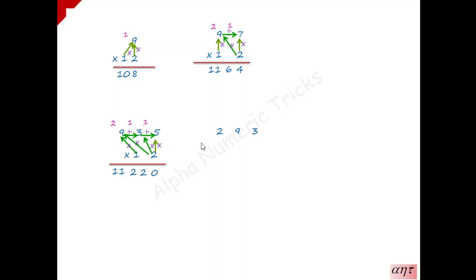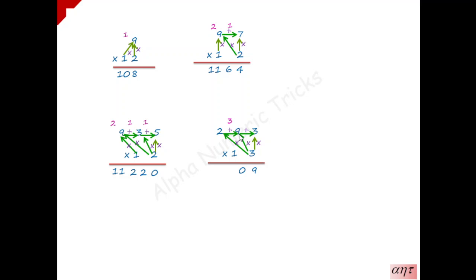Now multiply 293 by 13. 3 into 3 is 9 — write it here, no carry forward, leave the space blank. Then multiply 9 into 3, which is 27, and 27 is added with the immediate right number 3, which is 30 — 0 is written, 3 is carry forward. Then 3 into 2 is 6, 6 plus 9 is 15, 15 plus 3 is 18 — 8 is written, 1 is carry forward. Don't forget to multiply 1 with the last number 2: 1 into 2 is 2, 2 plus 1 is 3 — that is our final answer.